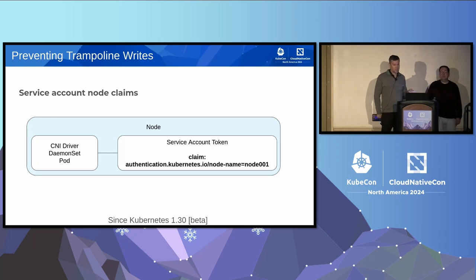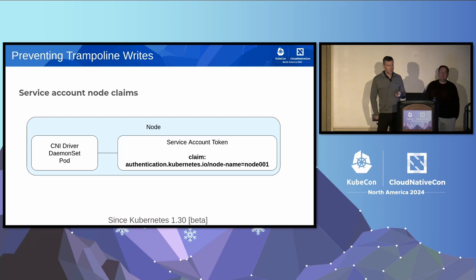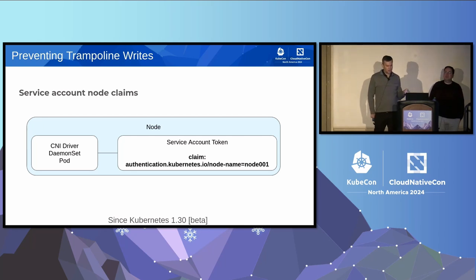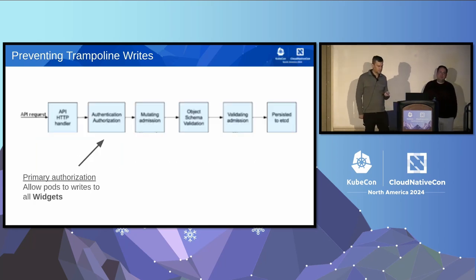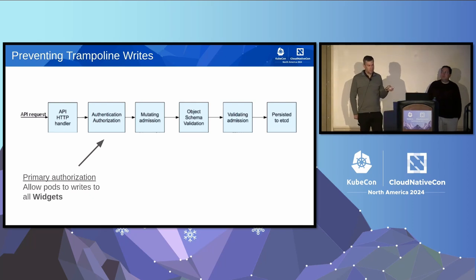One of the first enhancements that helps us solve this problem is service account node claims. This feature allows us to know for sure which node a request came from. It's part of the authentication system — there is a claim in the token that gets sent up to the API server, and we can know for sure that it is what it claims to be.